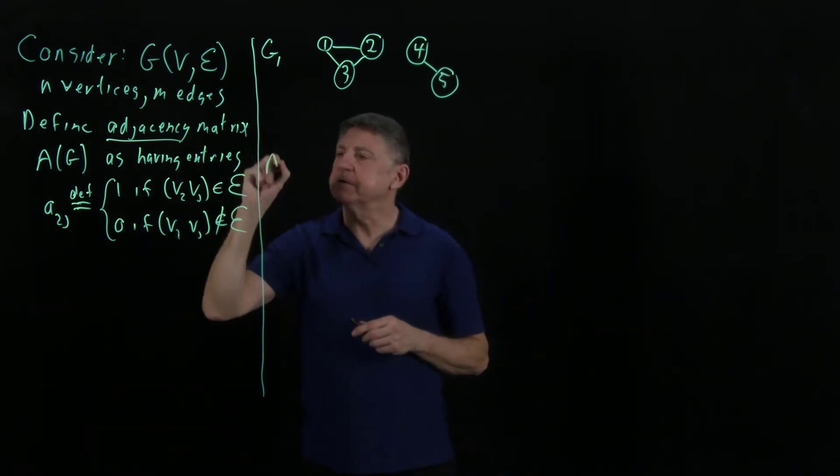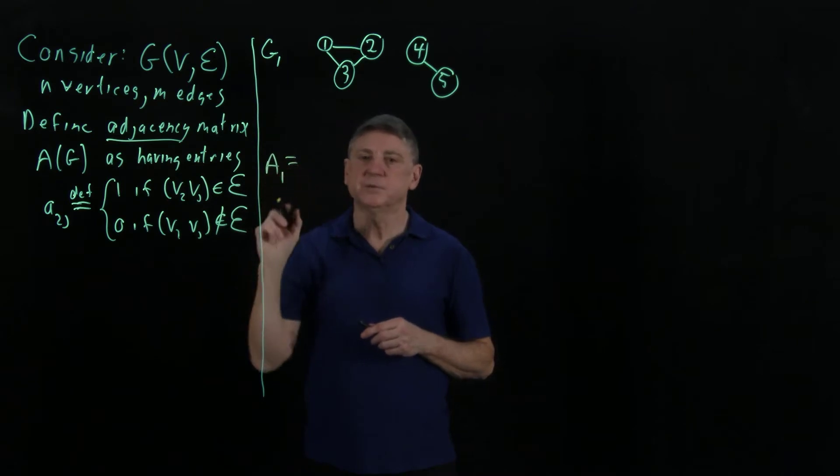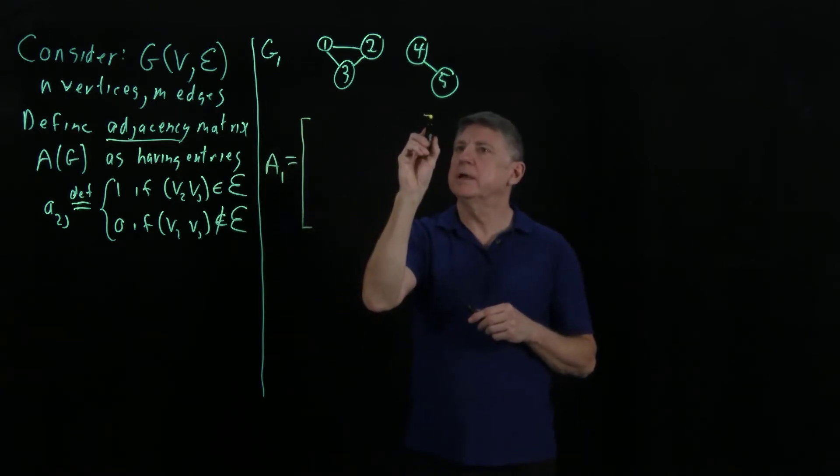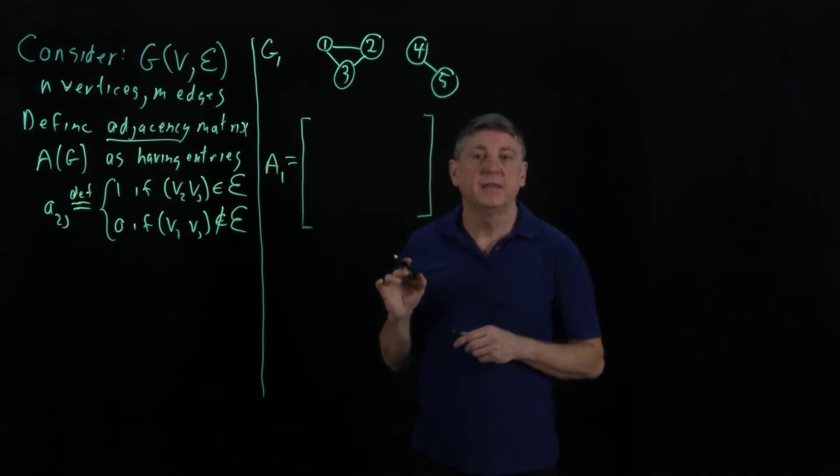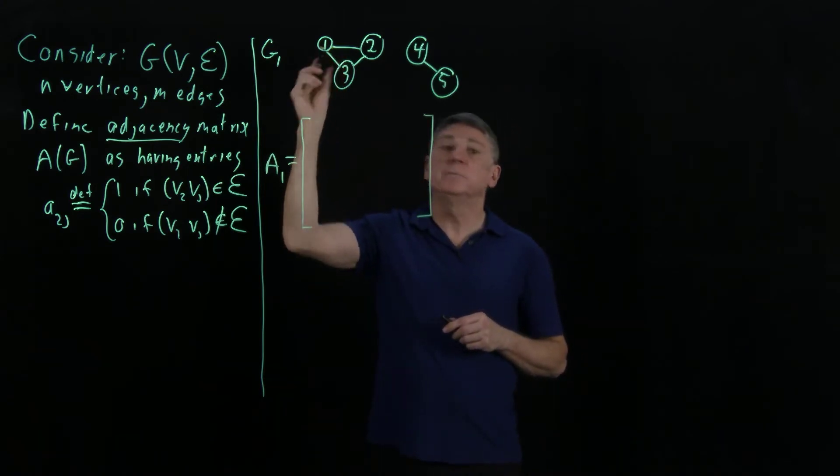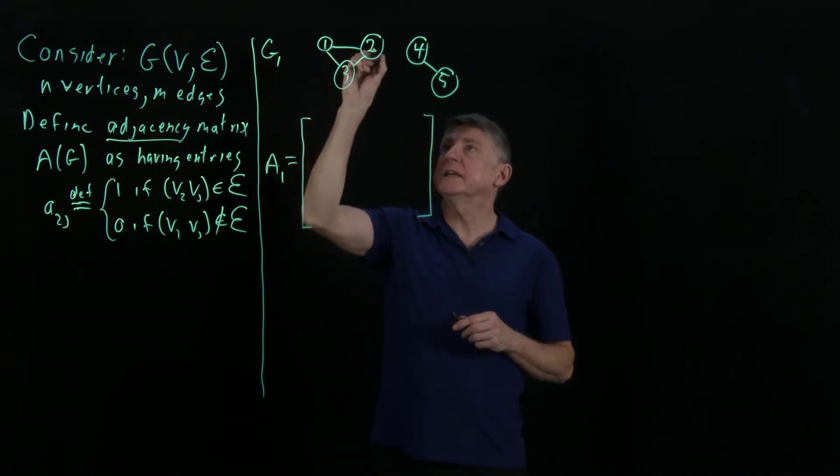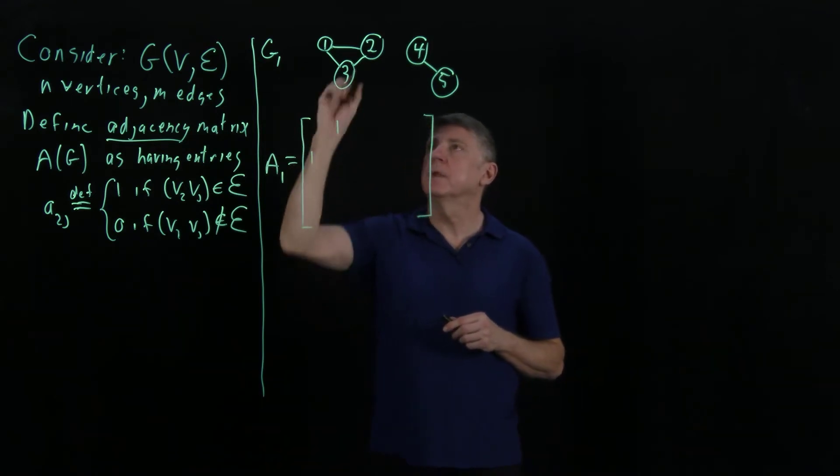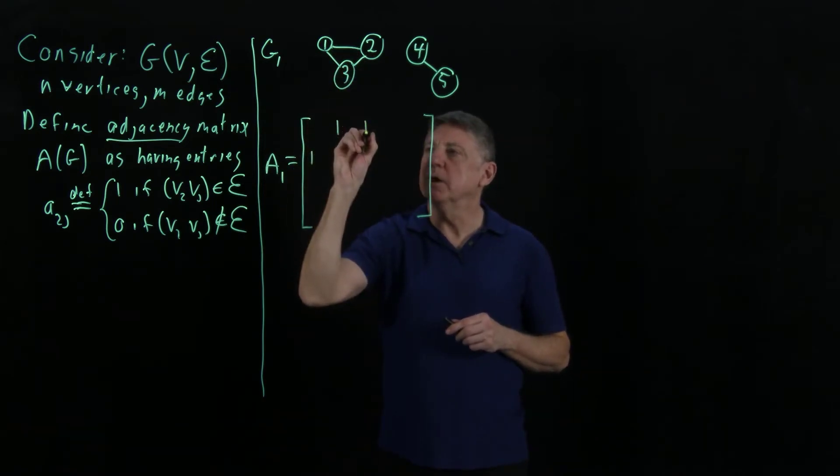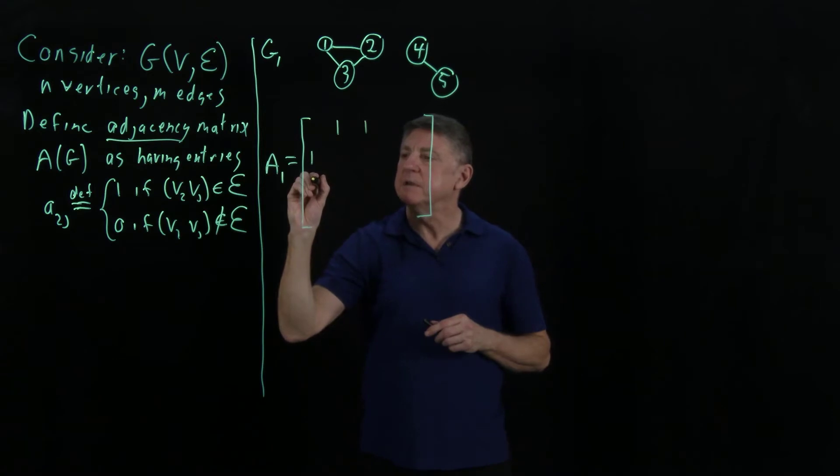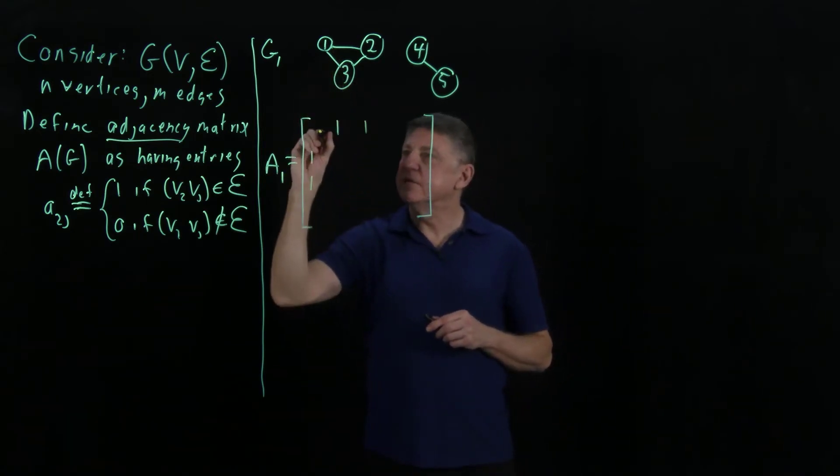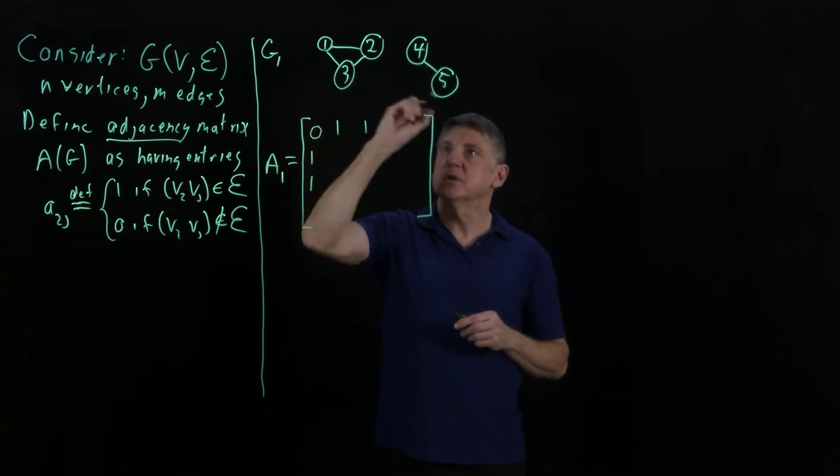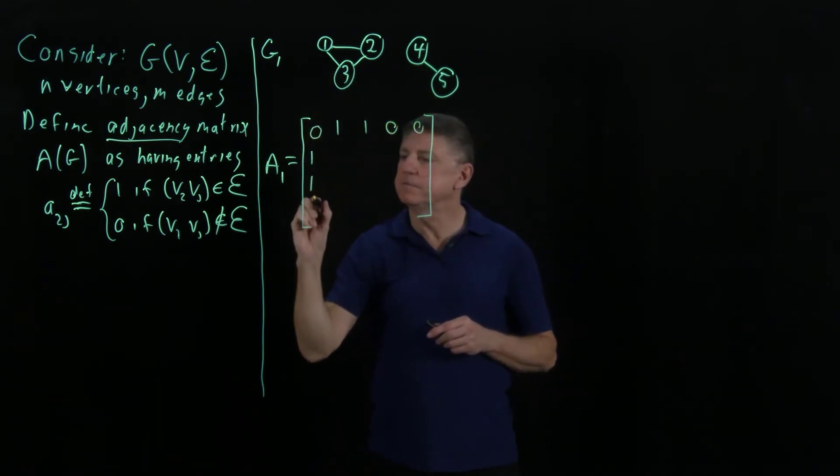Now let's write the adjacency matrix for this. So that'll be A1, we'll call it. And this will have 1, 2, 3, 4, 5 by 5. And what we'll do is we'll fill in the 1s first and then we'll fill in the 0s. So what we can do is we can begin with vertex 1. Vertex 1 is connected to vertex 2. So that means that entry 1, 2 is 1 and entry 2, 1 is 1. 1 is connected to 3. So entry 1, 3 is 1 and entry 3, 1 is 1. 1 is never connected to itself because we don't permit loops. And 1 is not connected to 4. 1 is not connected to 5.